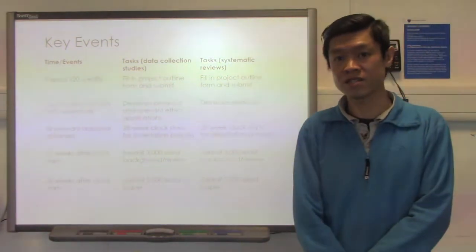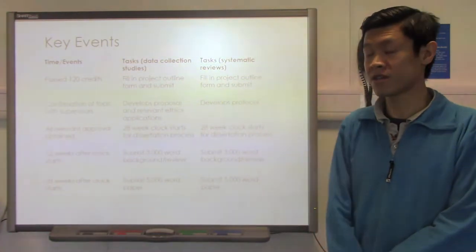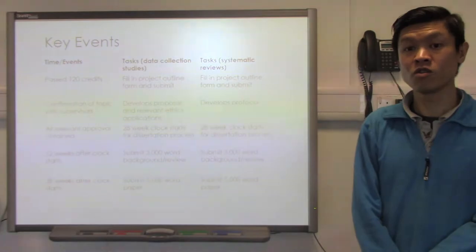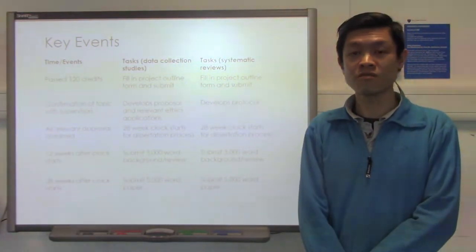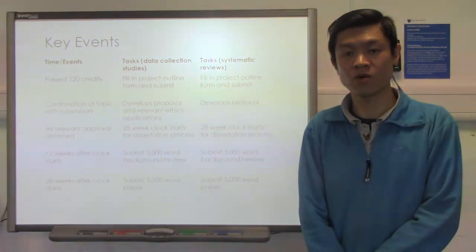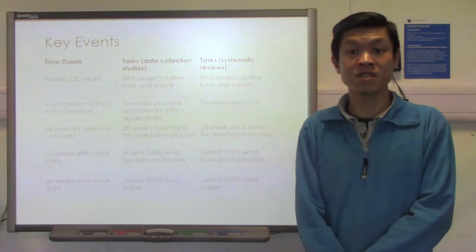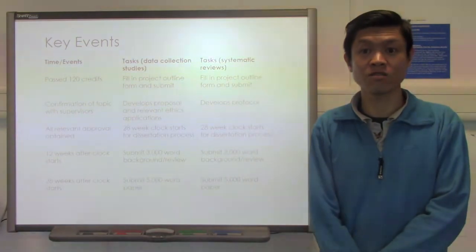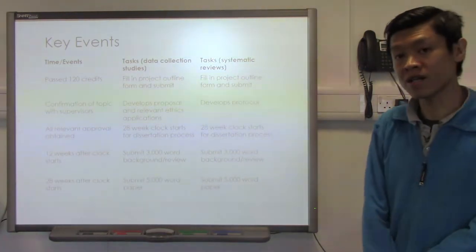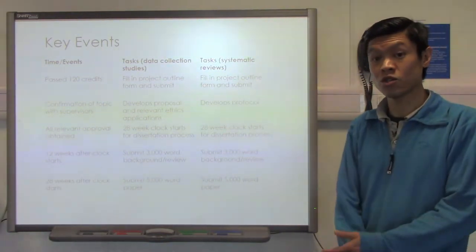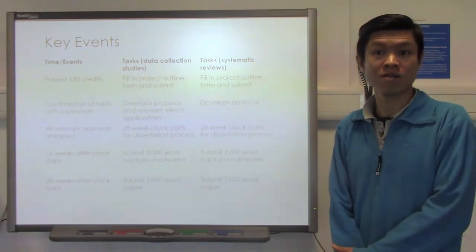There are several key events that you need to take note of during this dissertation journey and I've outlined these on the slide. You may or may not have already received your project outline form. The reason you received that form is because you have already passed about 120 credits throughout the entire master's program, and therefore this is the last module where you gain 60 credits in order to top it up to gain a master's degree. When you pass the 120 credits, we will send you the project outline form and what you need to do is fill that in and send it back to me or the module coordinator.